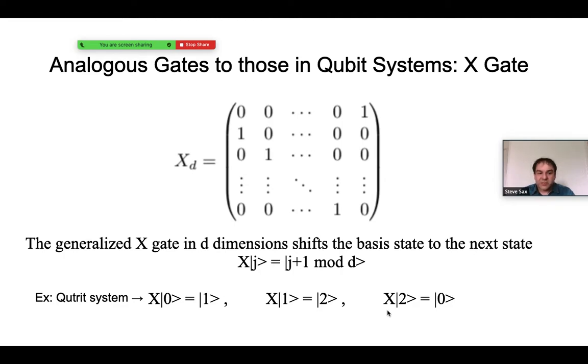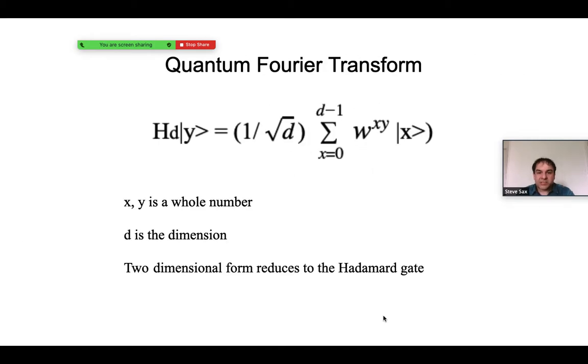Note again that when d equals 2, this reduces to the NOT gate. The generalization of the Hadamard gate is the quantum Fourier transform. We saw this in class. Just as a reminder, x and y here are whole numbers, d is the dimension. And again, when d equals 2, this reduces back to the Hadamard gate.